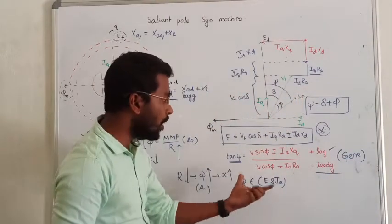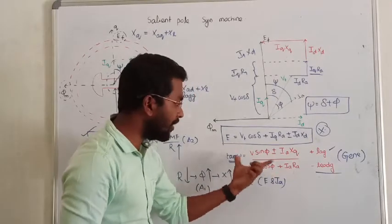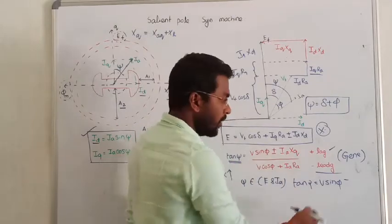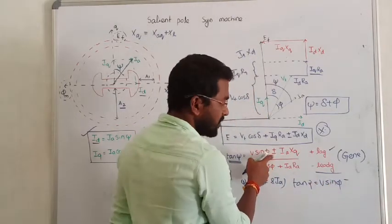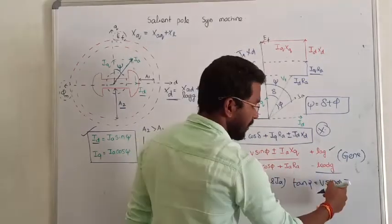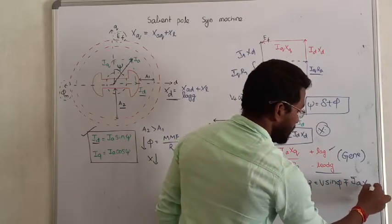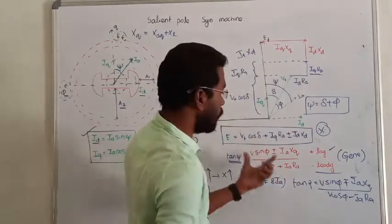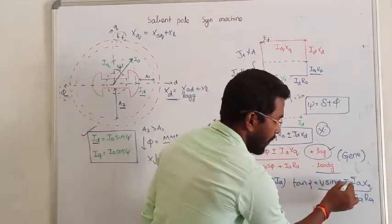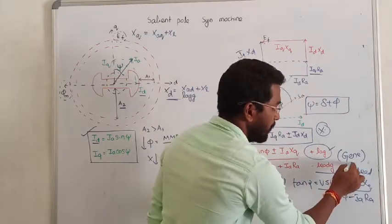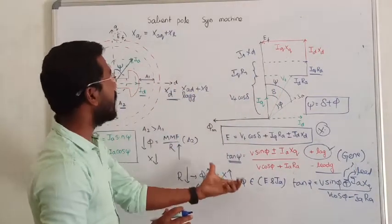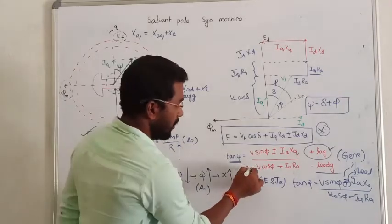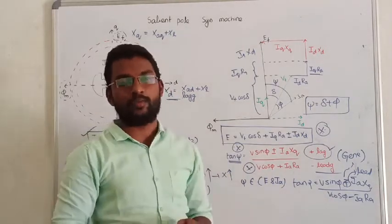In case of motor, do one thing: swap the plus and minus signs to get the same expression for motor. For a salient pole synchronous motor, tan(psi) equals [V·sin(phi) ± Ia·Xq] divided by [V·cos(phi) ± Ia·Ra], where plus is for lagging and minus is for leading power factor. This is all about salient pole synchronous machine — specifically the two-reaction theory. In the next lecture, we will see how to get the power equation for the synchronous motor. I hope you all understand. If you have any doubts, you can ask in the comment section. Thanks for watching.